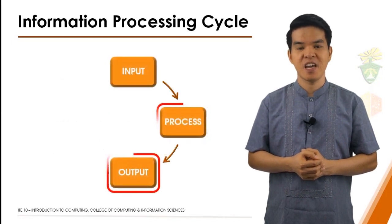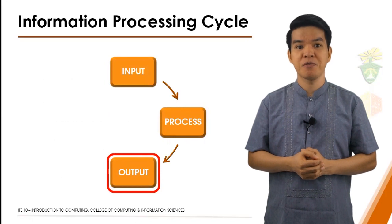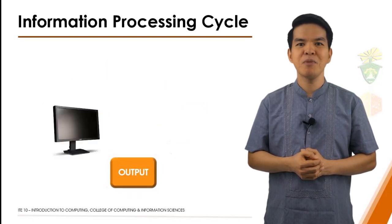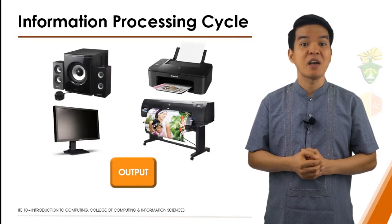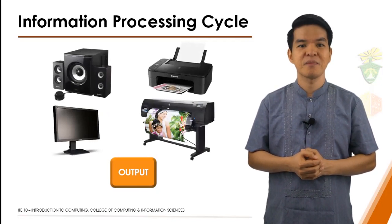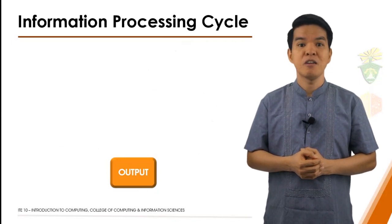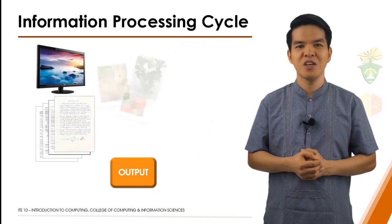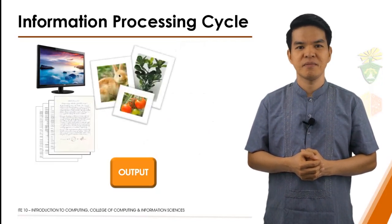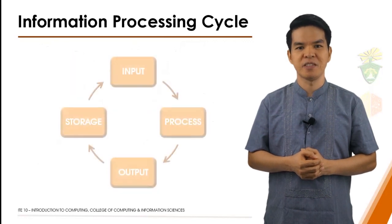In the IPOS output stage, information is sent to a computer screen, a printer, a plotter, or a speaker — or some other device that can be perceived by human senses. To most people, output means either a screen display, a written document or image, or may also mean audio output.